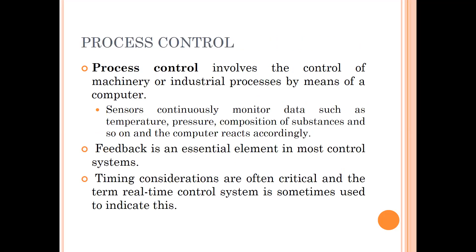Under process control, what are they used for? Process control involves the control of machinery or industrial processes by means of a computer. Sensors continuously monitor data such as temperature, pressure, composition of substances, and so on, and the computer reacts accordingly. Feedback is an essential element in most control systems. Timing considerations are often critical, and the term real-time control system is sometimes used to indicate this.